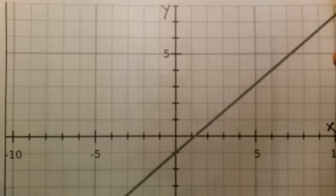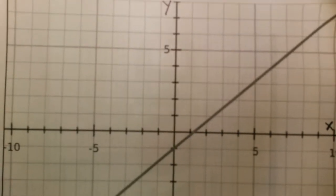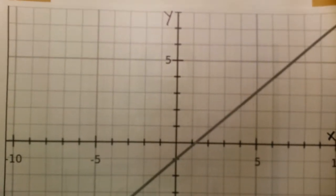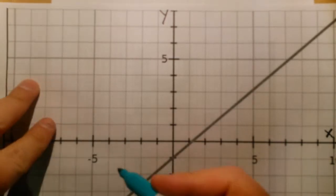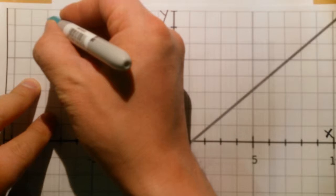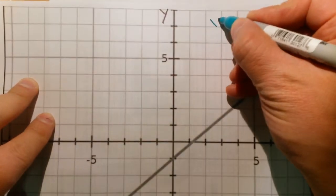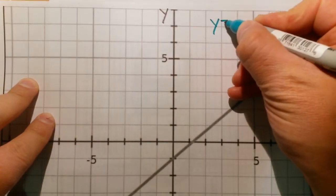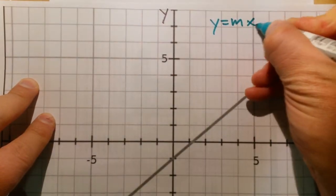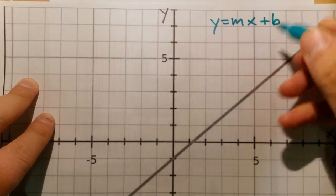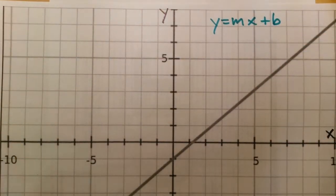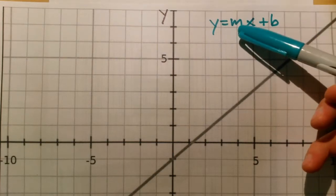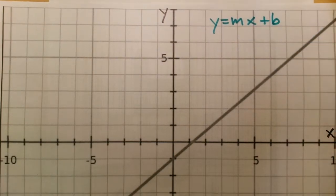So let's look at this line first. We have our grid. We know that the equation of a line is y equals mx plus b. This is the slope-intercept form of the line. M represents the slope, and b represents the y-intercept.